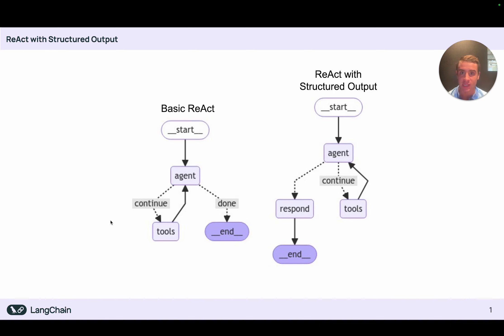On the left hand side of this diagram, you'll see what the architecture for a basic React agent is. This is a very simple architecture — we're going to have one LLM in the middle, that agent node, and all that LLM is going to do is determine whether to call some tools or to respond to the user. After it calls a tool, those tool responses will always be forwarded straight back to the LLM, who will then be called again to determine whether it needs to call more tools or whether it can just respond.